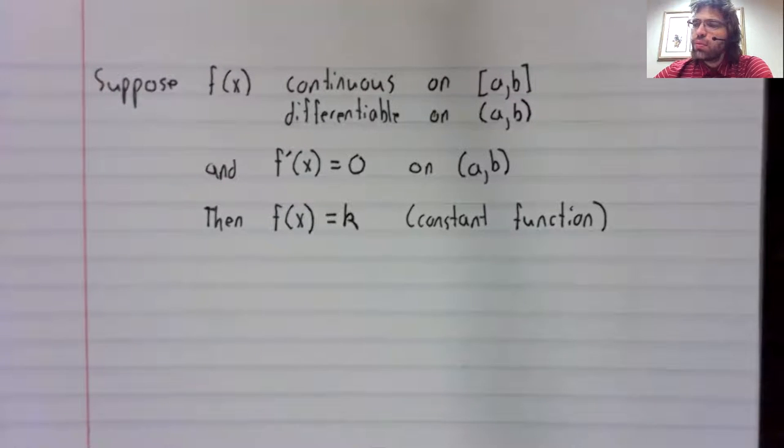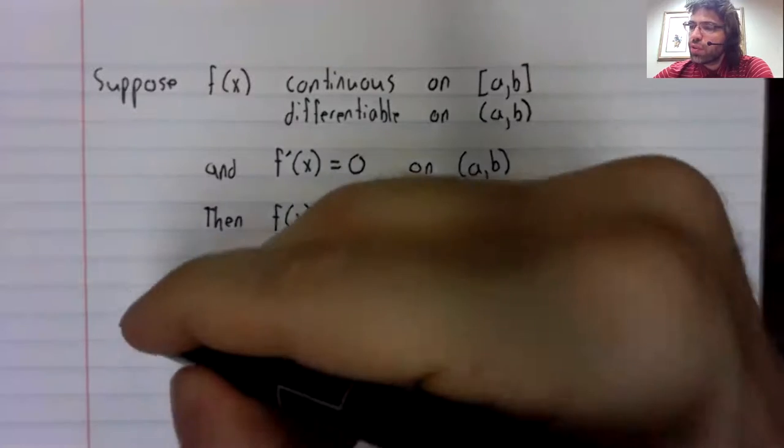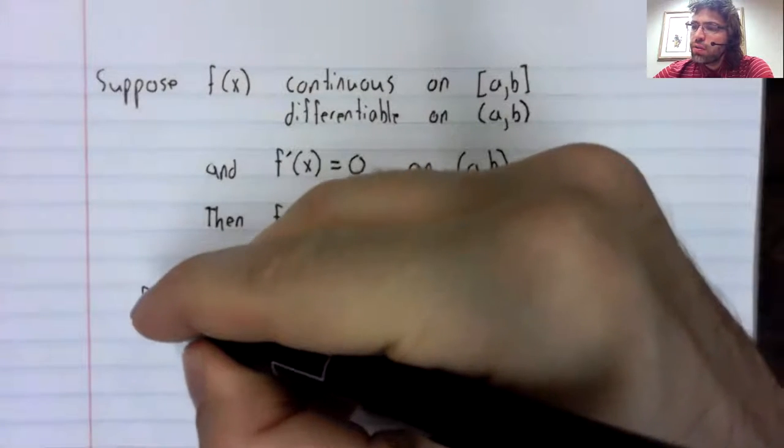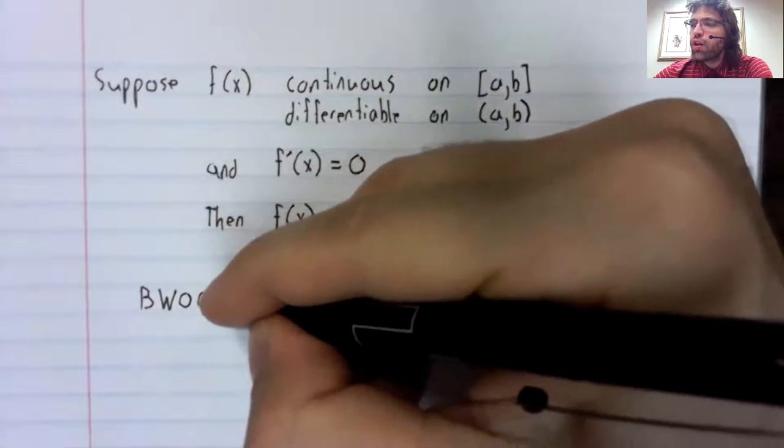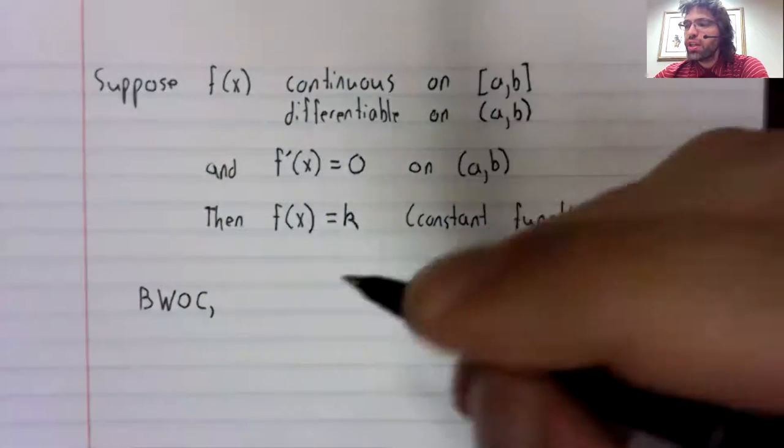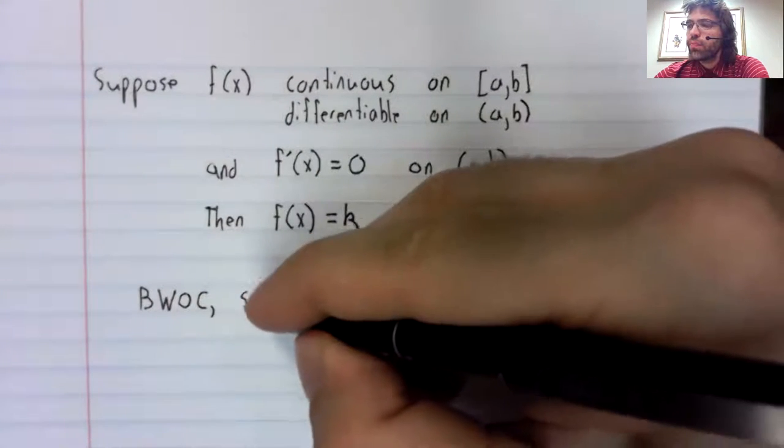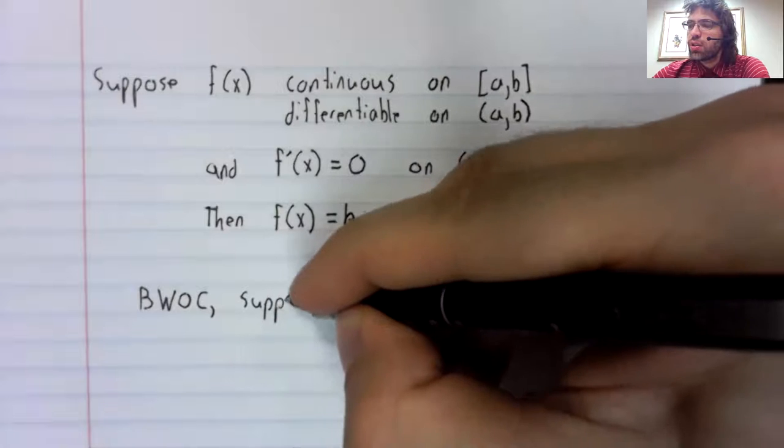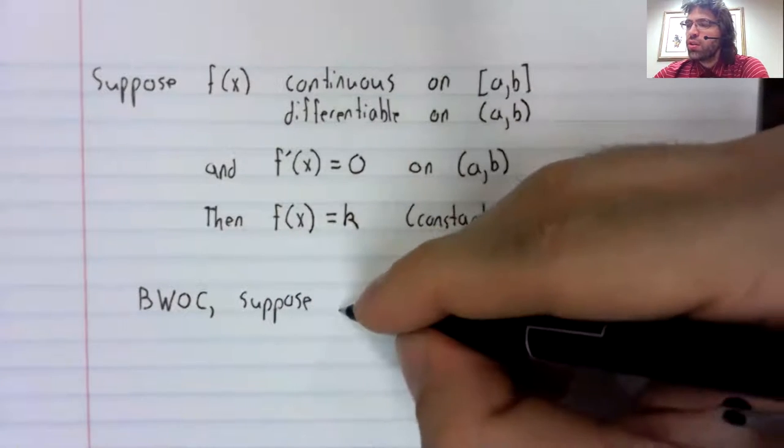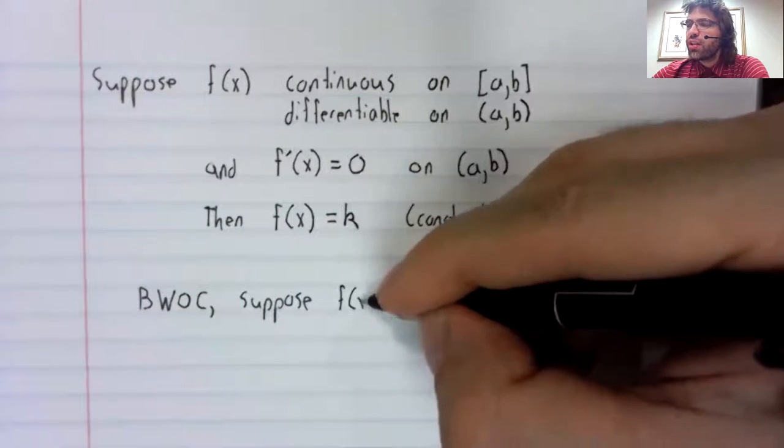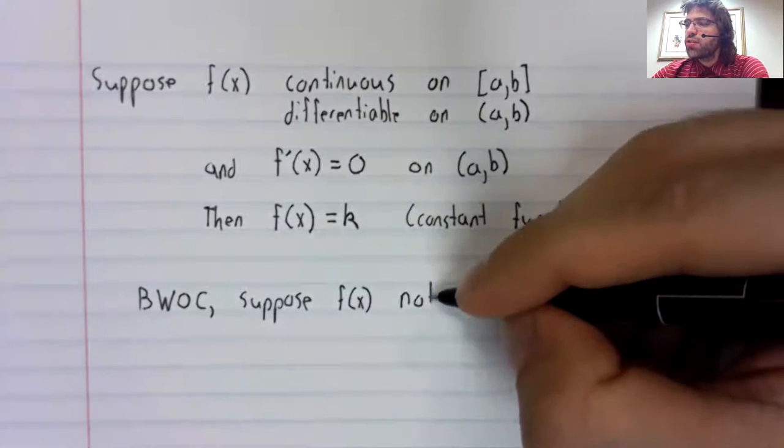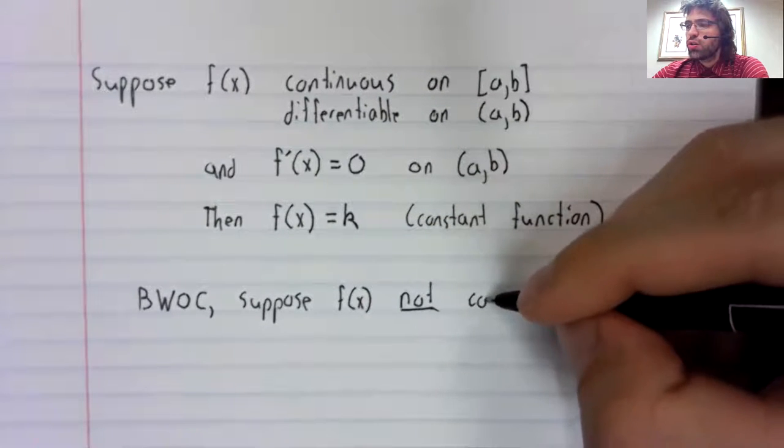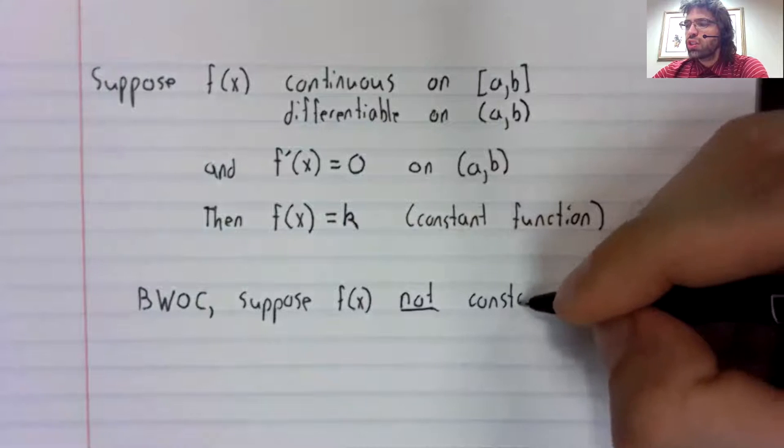By way of contradiction, suppose that f(x) is not constant.